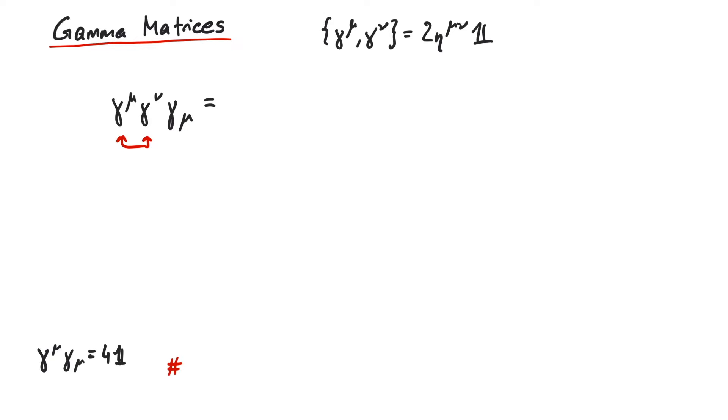And in order to exchange two gamma matrices, we use that AB equals minus BA plus the anticommutator of AB.